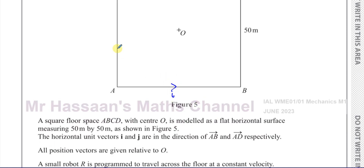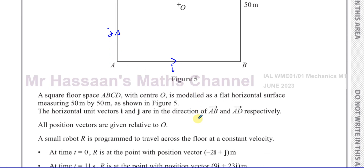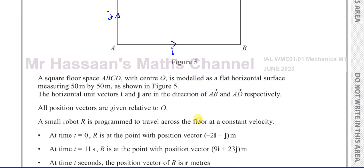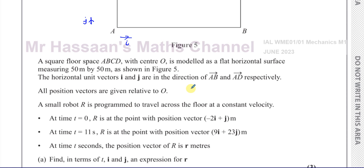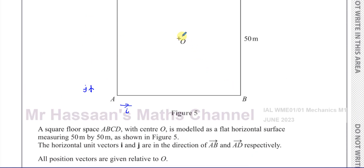So i is in this direction and j is in that direction — they're unit vectors, one unit long. I won't draw it like that because i is one unit in that direction and j is one unit in that direction. All position vectors are given relative to the origin O.